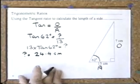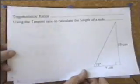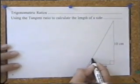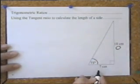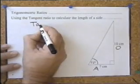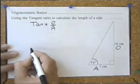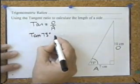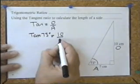For another example: tangent is the ratio between the opposite and the adjacent. In this particular case, I'm working with this angle. With respect to that angle, this is the opposite because it's opposite the angle, and this is the adjacent because it's next to it. So I'm going to use the tangent ratio. The tangent of 37 degrees equals the opposite, which is 10 centimetres, over the adjacent, which is the unknown.